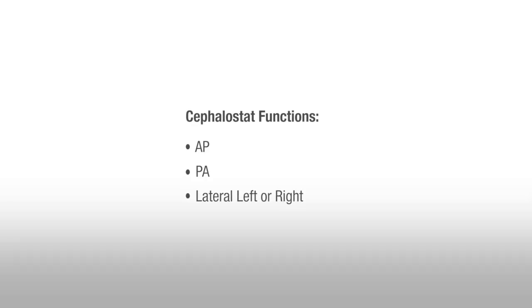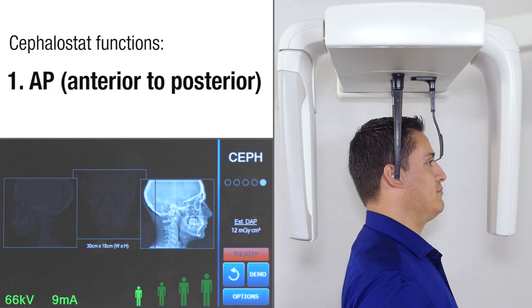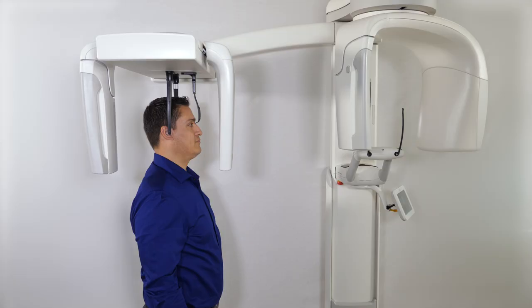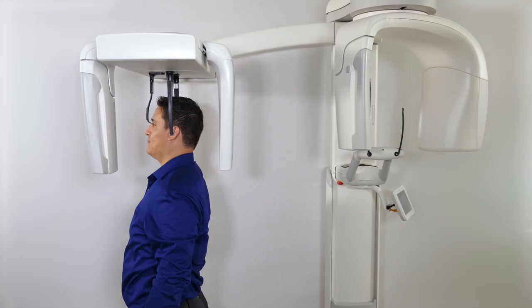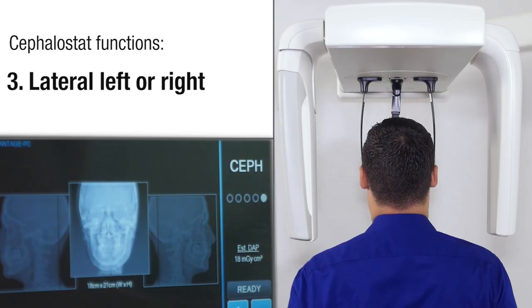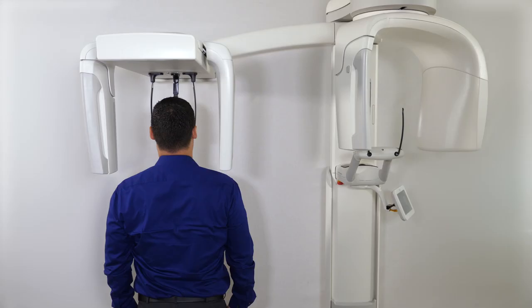Next, determine the CEPH study needed for the patient and select the desired function. There are three CEPH functions: the AP, the image taken from the anterior to the posterior of the head, or nasion toward the tube head; the PA, the image taken from the posterior to the anterior of the head, nasion opposite the tube head; and lateral left or lateral right. The otic posts are in line with the X-ray tube head.